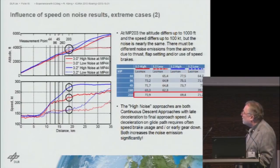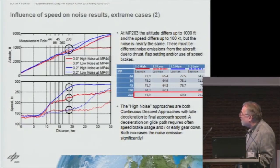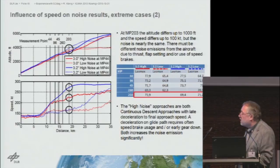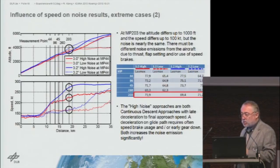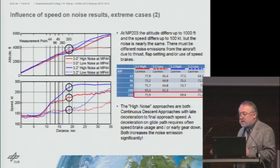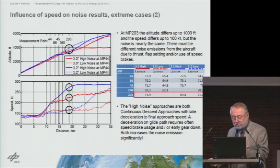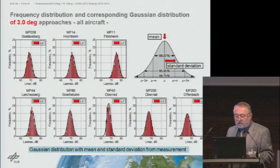When looking at measurement point 203, close to Offenbach, you can see that even though there are differences in altitude and speed, the noise level ends up the same. This can only be due to the fact that very different procedures are applied in those flight paths — the thrust differs, and maybe the landing gear is already deployed. We cannot definitively confirm that because we lack the cockpit data, as illustrated earlier.